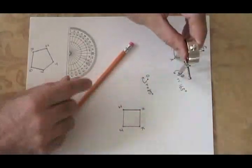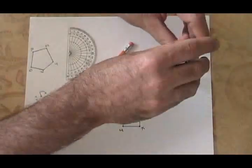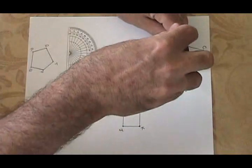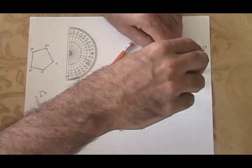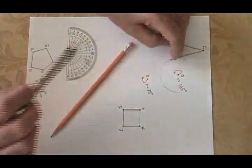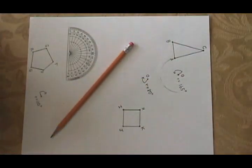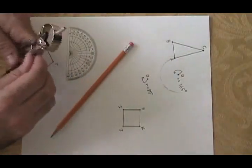Then I draw an arc in the direction of the rotation, which in this case is counterclockwise, and I just make sure that the arc I draw is more than the degree measure of the rotation. So I've drawn a 180 degree arc which is more than the 165 I need.